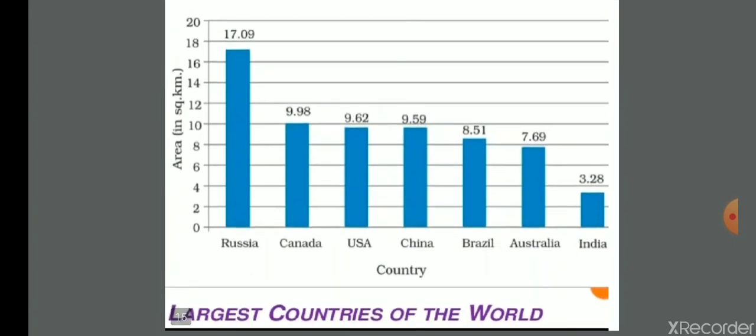India is the world's 7th largest country. The largest countries in the world in order are: Russia, Canada, USA, China, Brazil, Australia, and 7th is India.